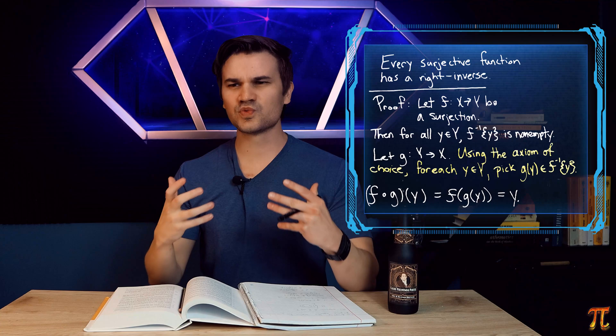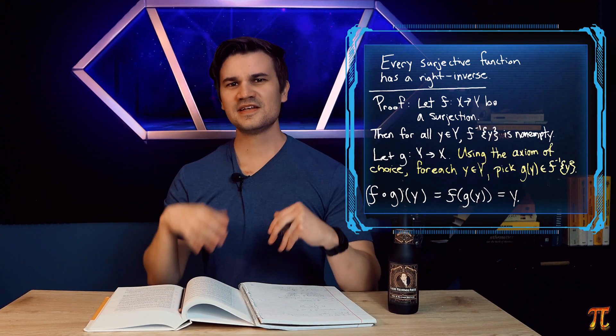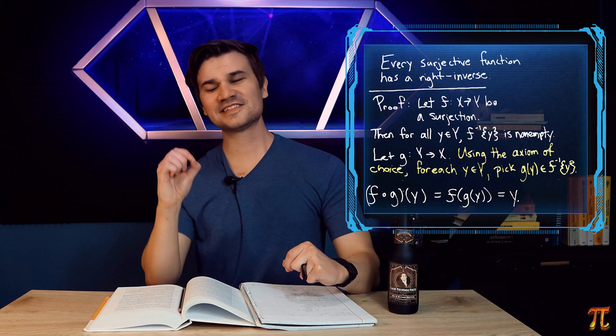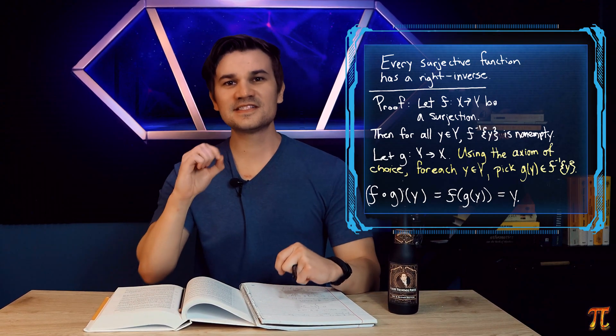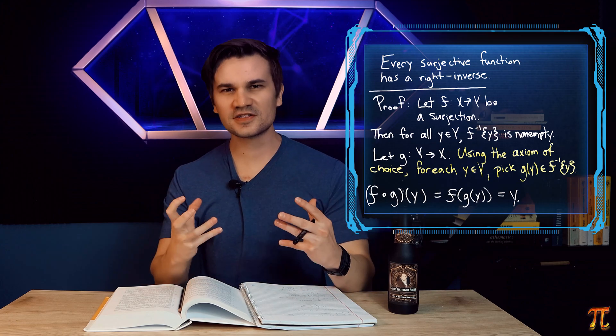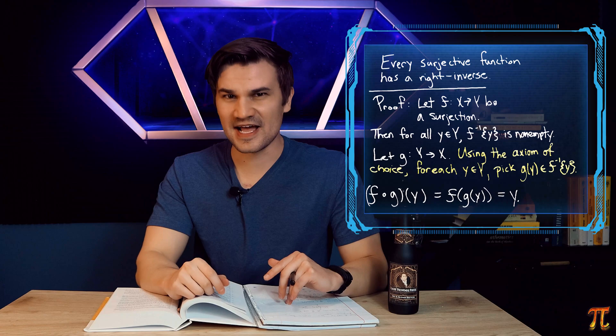Likewise, what if x was a well-ordered set, like the set of natural numbers? Then each preimage is a subset of x, and so it has a least element. Now I can say, for each y, map to the least element of its preimage. This is deterministic. I've constructed the inverse. I didn't shift the selection to the reader, so I did not use the axiom of choice here.